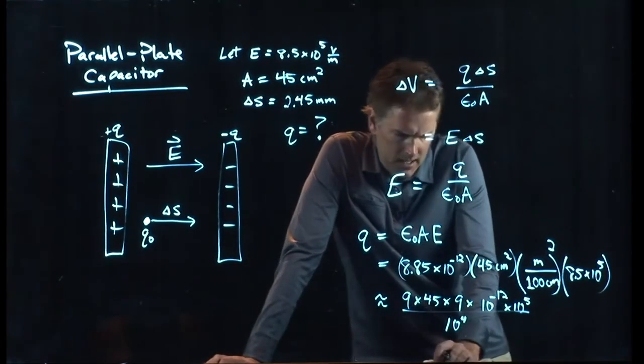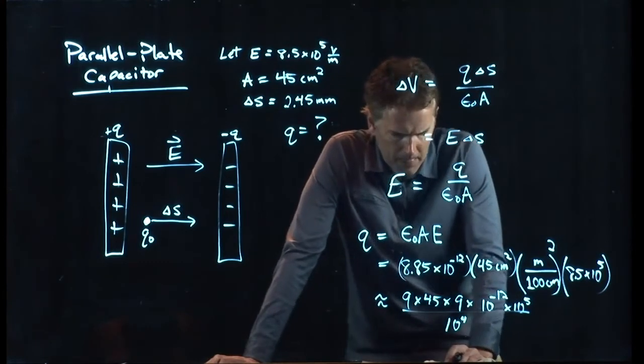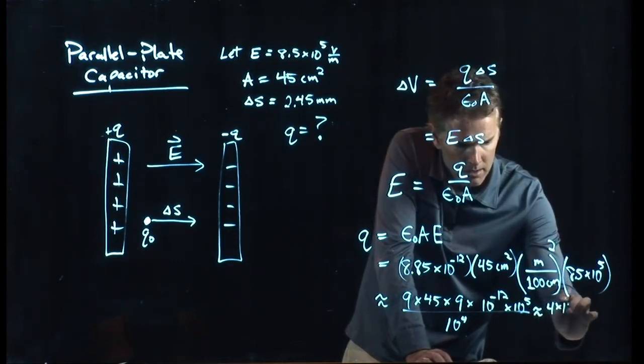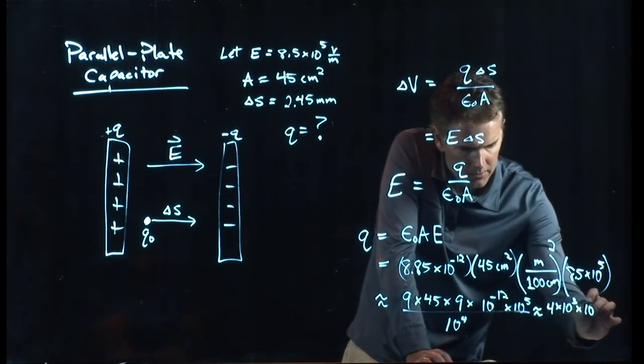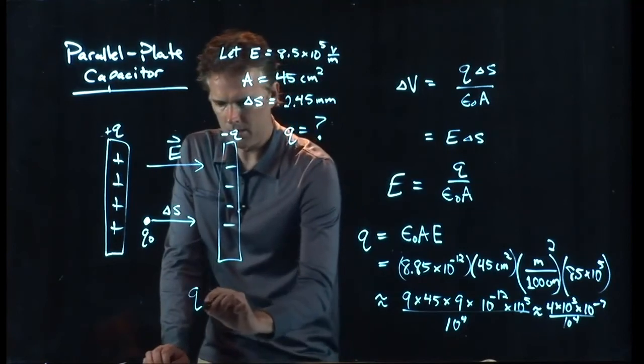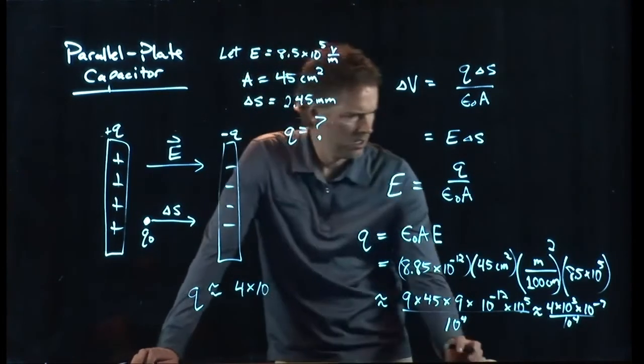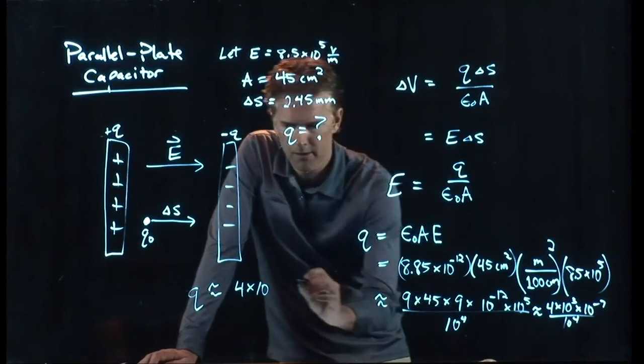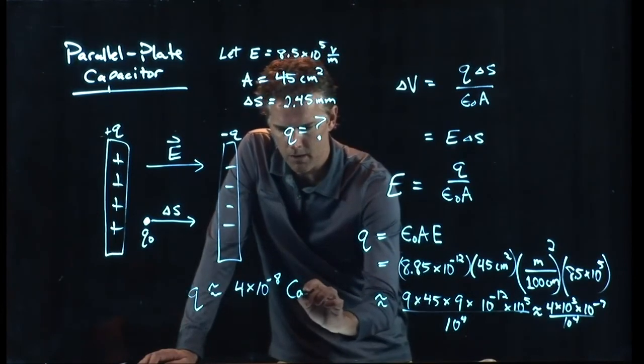9 times 9 is 81. 80 times 50 is 400. 4,000, sorry. So we get a 4 times 10 to the 3 up there. And then we've got a 10 to the minus 12 and a 10 to the 5. So that's a 10 to the minus 7. We're going to divide by a 10 to the 4. And so I'm going to say that Q has got to be approximately 4 times 10 to the, I get a minus 4 up there. I have a 4 right there. And so that's going to be a 10 to the minus 8. Units are Coulombs.